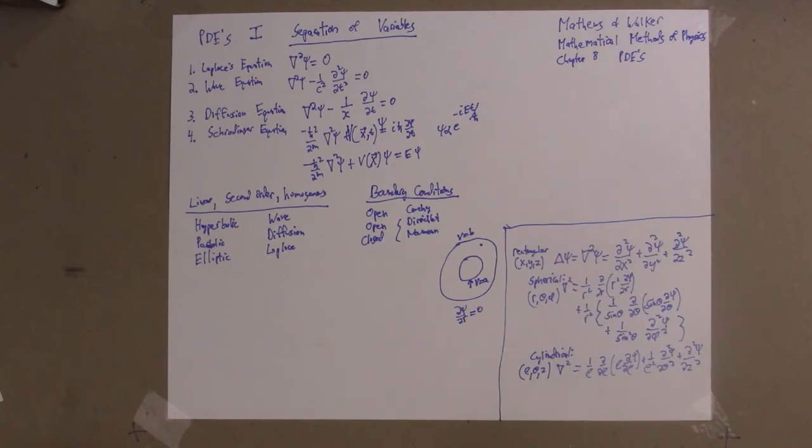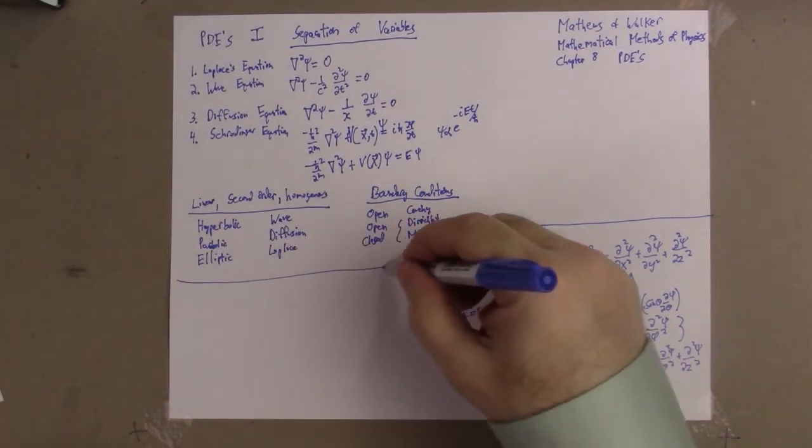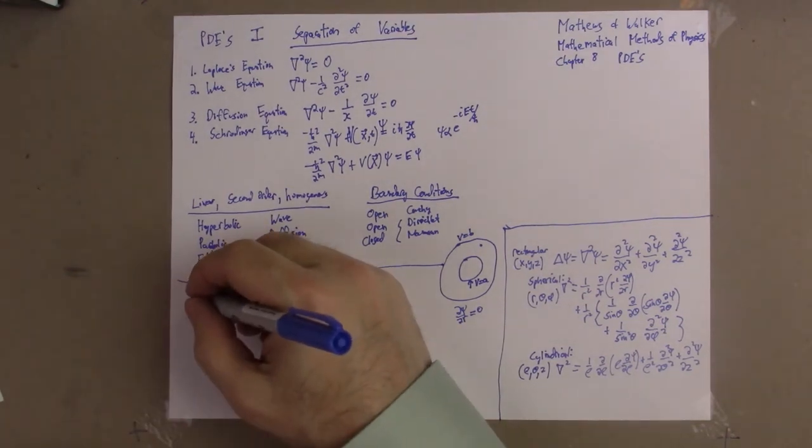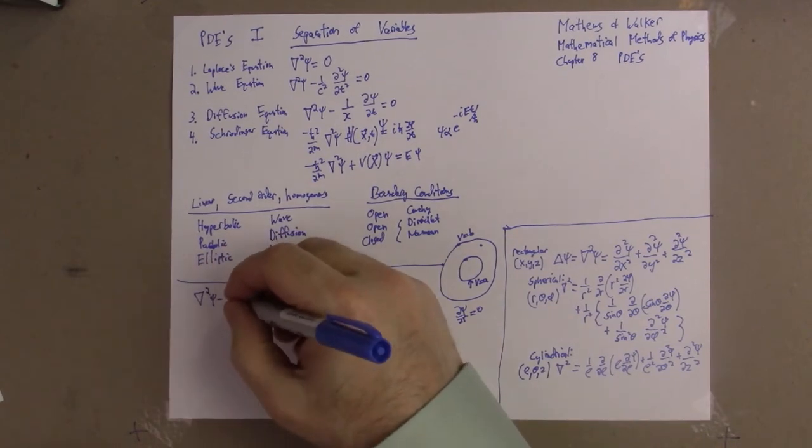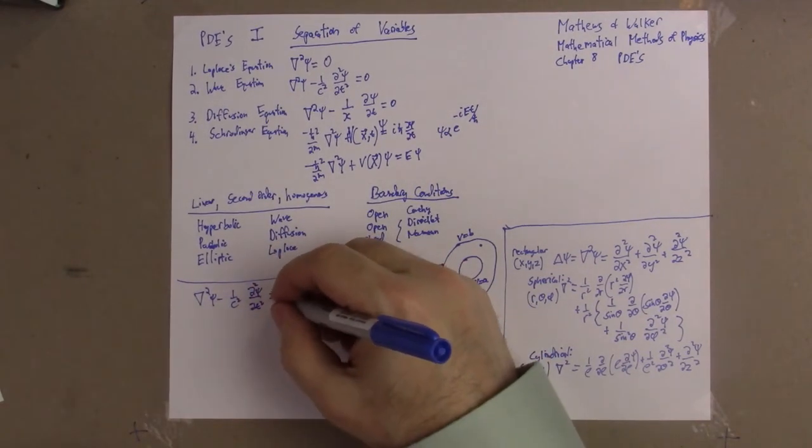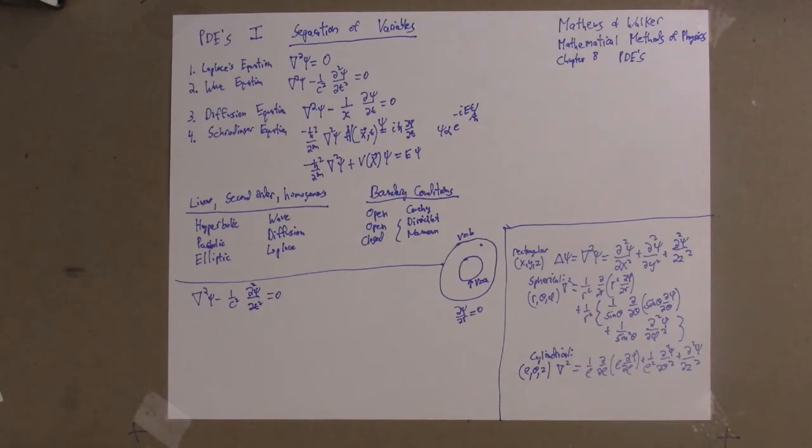That's the general outline of what we're going to do, and I want to start now with just an example of a separation. We'll start, because we'll use this several times, with the wave equation. We'll separate this in spherical coordinates.